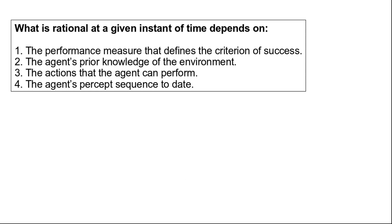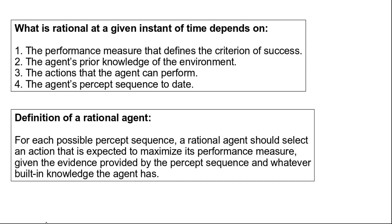So now what is rational at a given instant of time depends on four different things: number one is the performance measure that defines the criteria for success; the agent's prior knowledge of the environment; the actions that the agent can perform; and the agent's percept sequence to date. These four things determine what is rational at a given instant of time and determine the definition of a rational agent. For each possible percept sequence, a rational agent should select an action that is expected to maximize its performance measure, given the evidence provided by the percept sequence and whatever built-in knowledge the agent has.